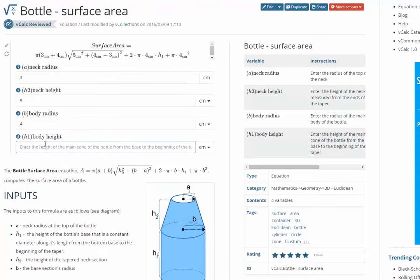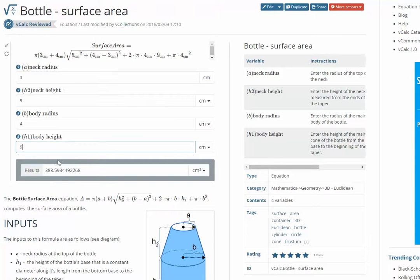And then the height of the body we're going to put at nine centimeters. And what this does is then makes the calculation and tells you the total surface area of the bottle.